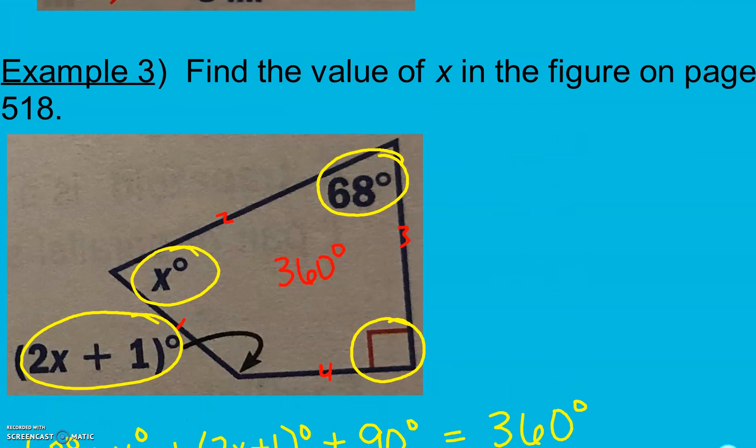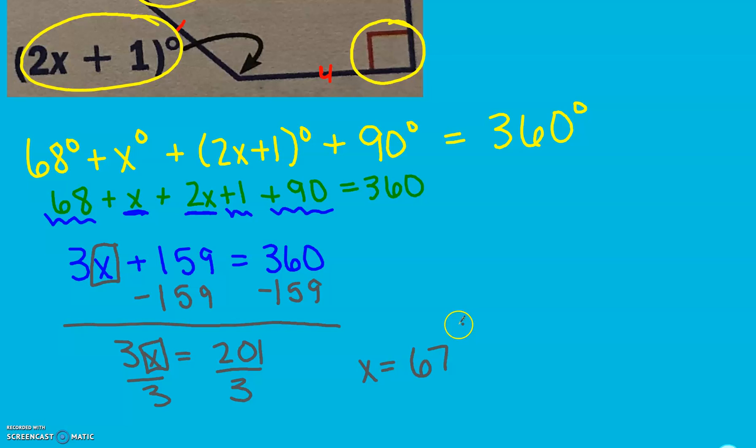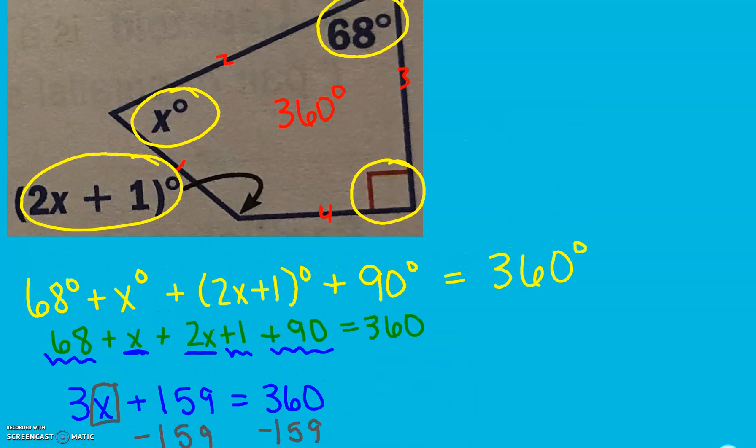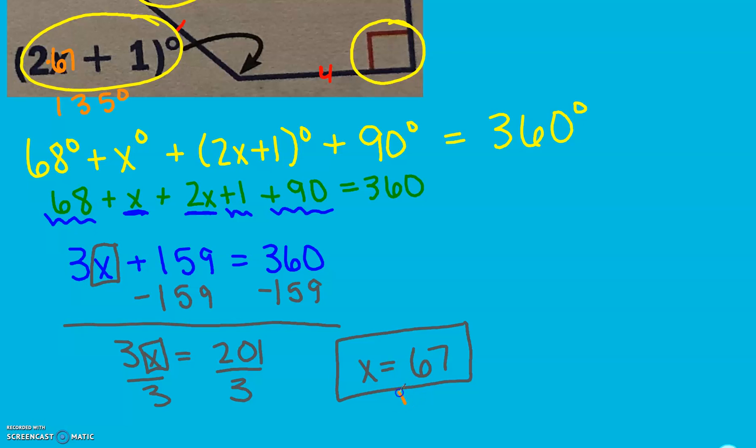In the problem, they just want to know the value of x, so we solved it for x. If they wanted to know the angle measures, we would plug x in everywhere there is an x. For example, this one would be 67 degrees, and this one would be 2 times 67 plus 1, which gives me 135 degrees. So the angle measures would be 68, 67, 135, and 90. But all they want here is x, and we solved for that. That's all I have for section 10-2.